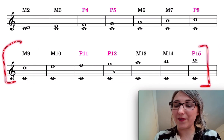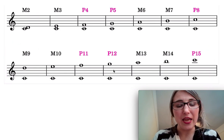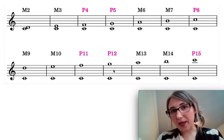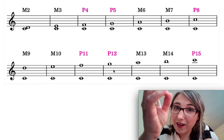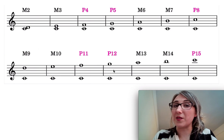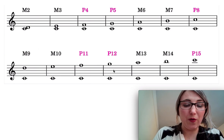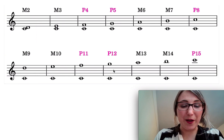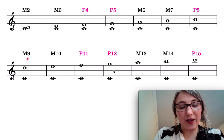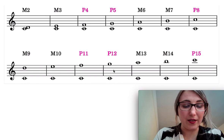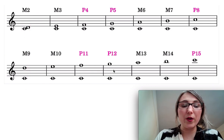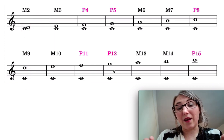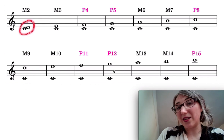On the bottom staff I have a number of examples of compound intervals. Probably the easiest way to construct and identify them is to reduce the octave out of the interval and think about them as their simple variants. For instance, if I take this interval — the ninth — and subtract the octave out, I imagine moving this D down so it looks like a second.